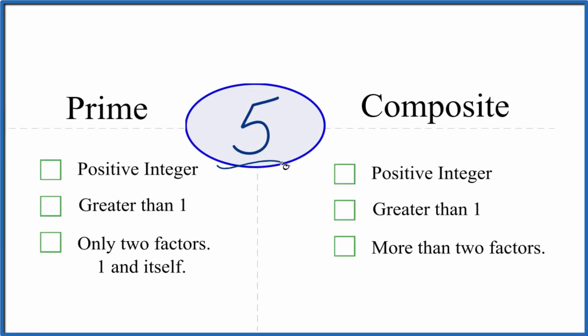So how can you tell whether 5 is a prime number or a composite number? Well, here's how you do it. So first off, let's see whether 5 is a prime number.